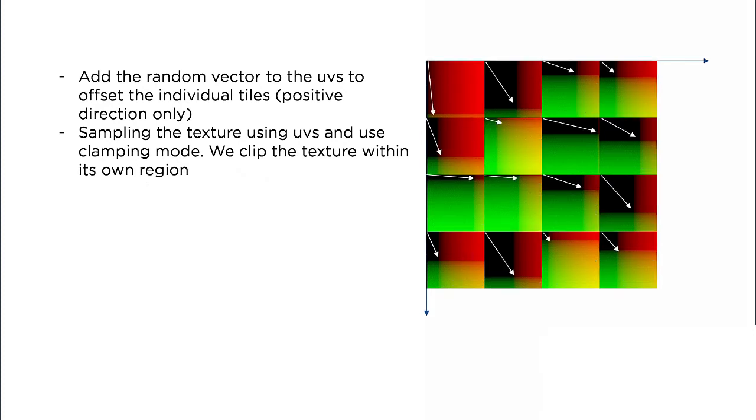Then, we actually apply the random offset, and this has the effect of offsetting the texture in the positive direction. It's also worth pointing out that because the random values are between 0 and 1,